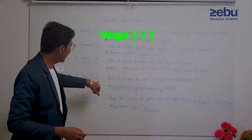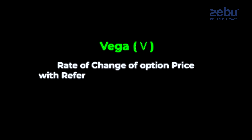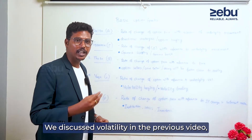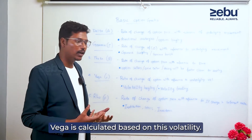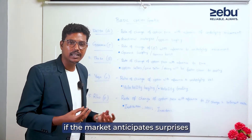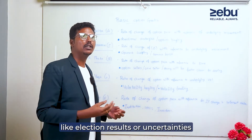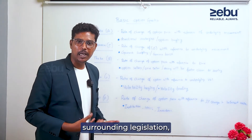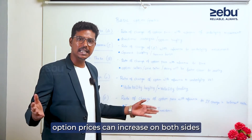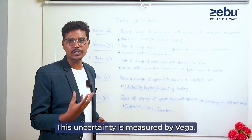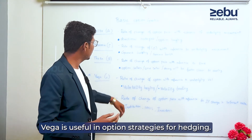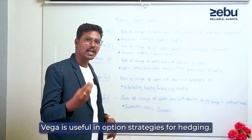Vega. Rate of change of option price with reference to underlying volatility. Volatility is important to measure. When the market is expecting something surprising — election results, uncertainty, budget, RBI CUP — the option price increases. When there is uncertainty and the market is surprised, that is volatility.